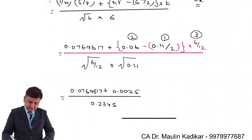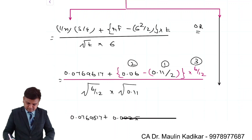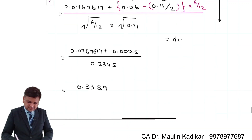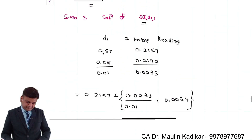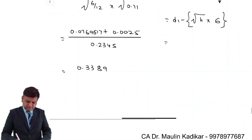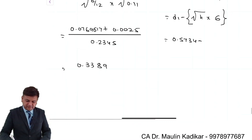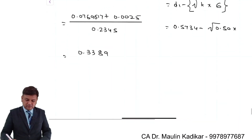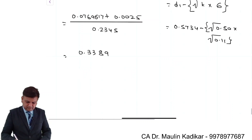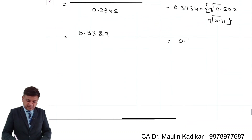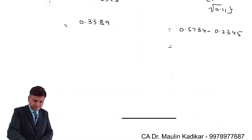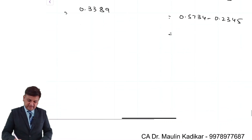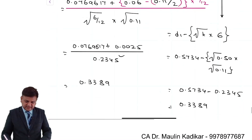The alternative method works like this: it is D1 minus the denominator, that is the square root of the time period multiplied by the standard deviation. The value of D1 is 0.5734, minus the square root of 0.5 multiplied by the square root of 0.11 — that is the square root of the variance — which equals 0.5734 minus 0.2345, giving 0.3389. That is how the D2 value can be found.